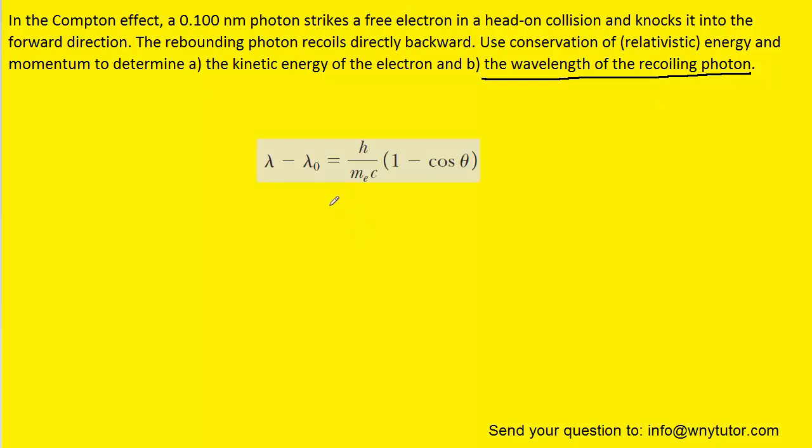And to do that, we're going to use the so-called Compton effect. And so in this equation, we have the initial wavelength of the incident photon. And then here, we have the wavelength of the recoiling photon.